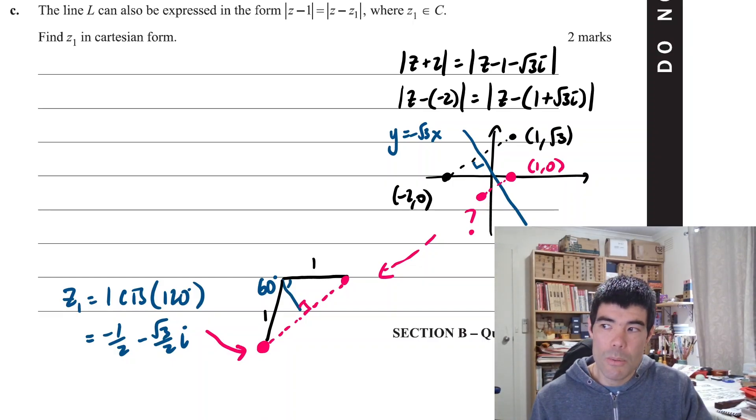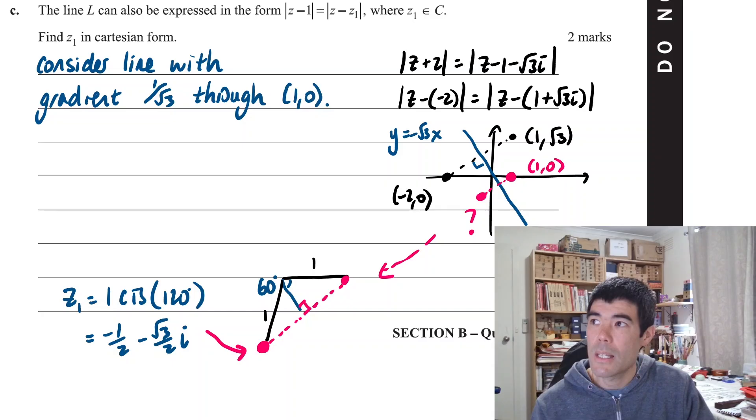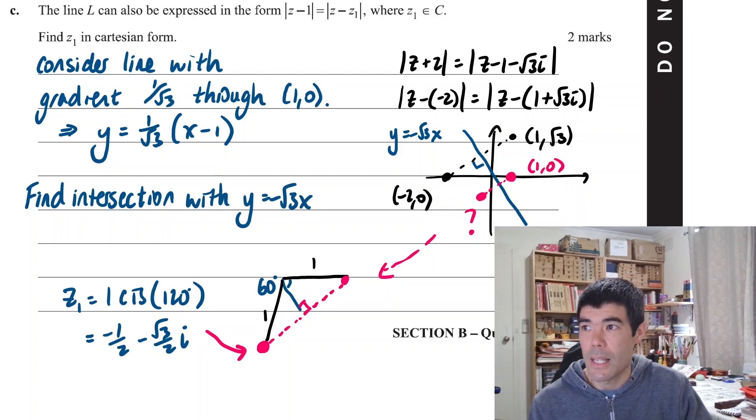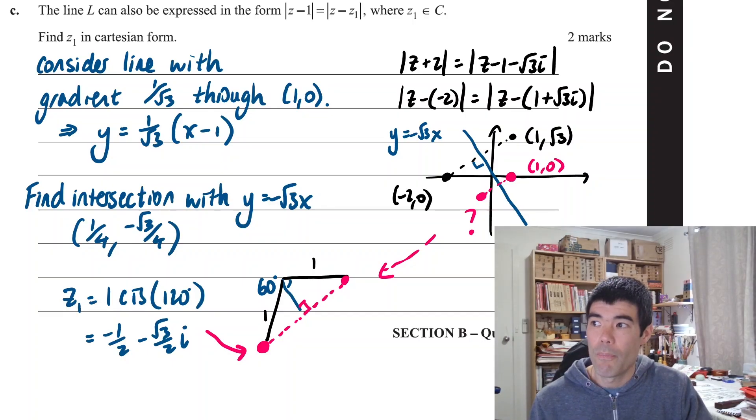But another way we could do it is to consider the pink line segment as a line with gradient 1/√3 through the point (1,0), because it's got to have a perpendicular gradient to -√3. So we find the equation is 1/√3(x-1). Now we're interested in the point where the pink line and the blue line intersect. We can probably find that on the CAS calculator doing a solve is 1/4, -√3/4. Now we have that point. That point is the midpoint of that perpendicular bisector. So we can work backwards from (1,0) through the midpoint to find the coordinates of z1, -1/2, -√3/2.